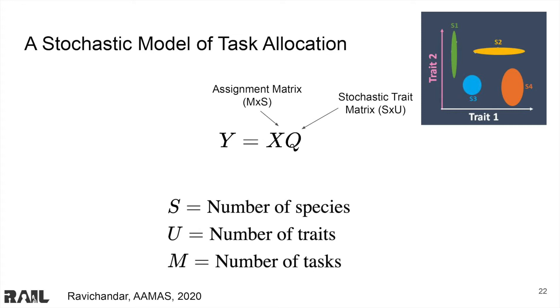X is an M by S assignment matrix assigning S agents to the M tasks. In other words, it defines how many agents are assigned to each task. Finally, by multiplying X and Q, we get the stochastic aggregated trait matrix describing how much of each aggregated trait is allocated to each of the M tasks.